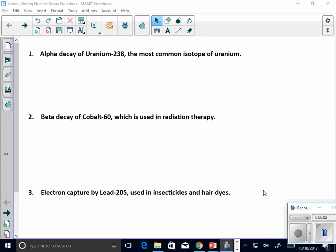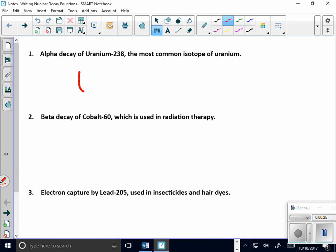Here we go. We are going to work these equations dealing with nuclear decay. As I start off, it says alpha decay of uranium-238, the most common isotope of uranium. So when I have uranium-238...